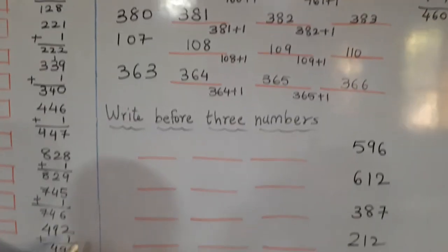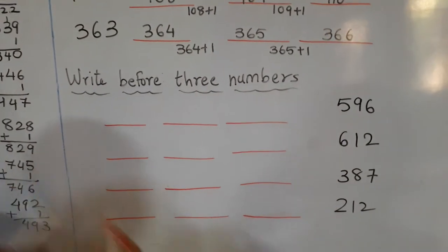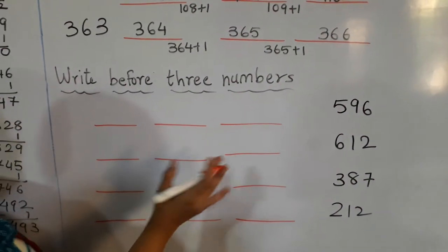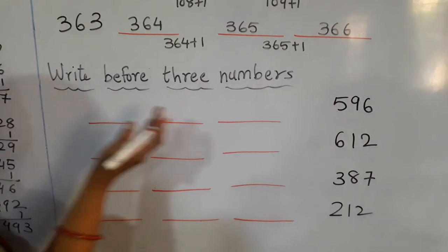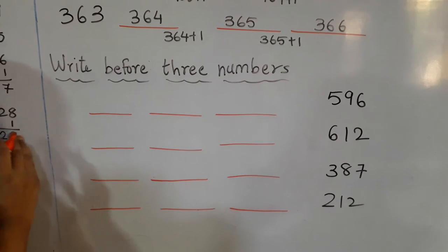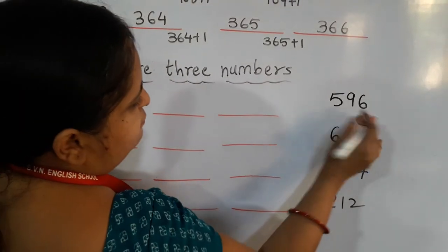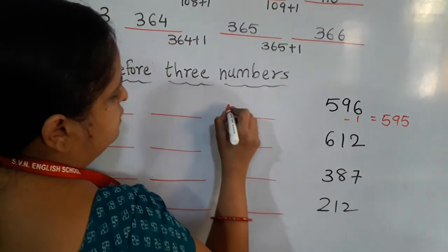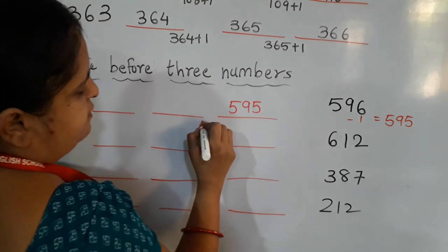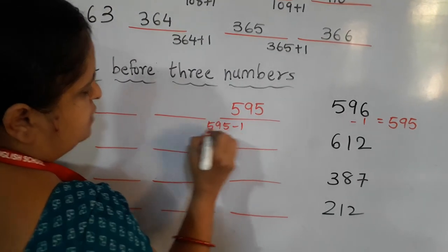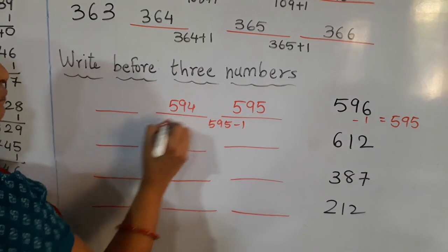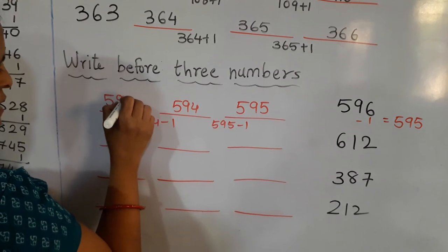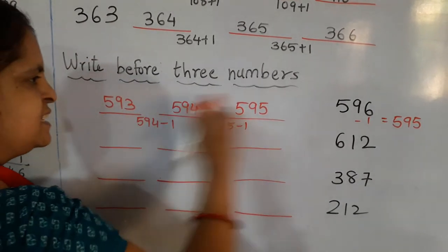Now just like that, after learning after-numbers, we are going to see the before-3-numbers. For before numbers, you subtract 1 each time, coming from the back side. For 596: subtract 1 gives 595, then 595 minus 1 gives 594, then 594 minus 1 gives 593. So the sequence is 593, 594, 595, 596.